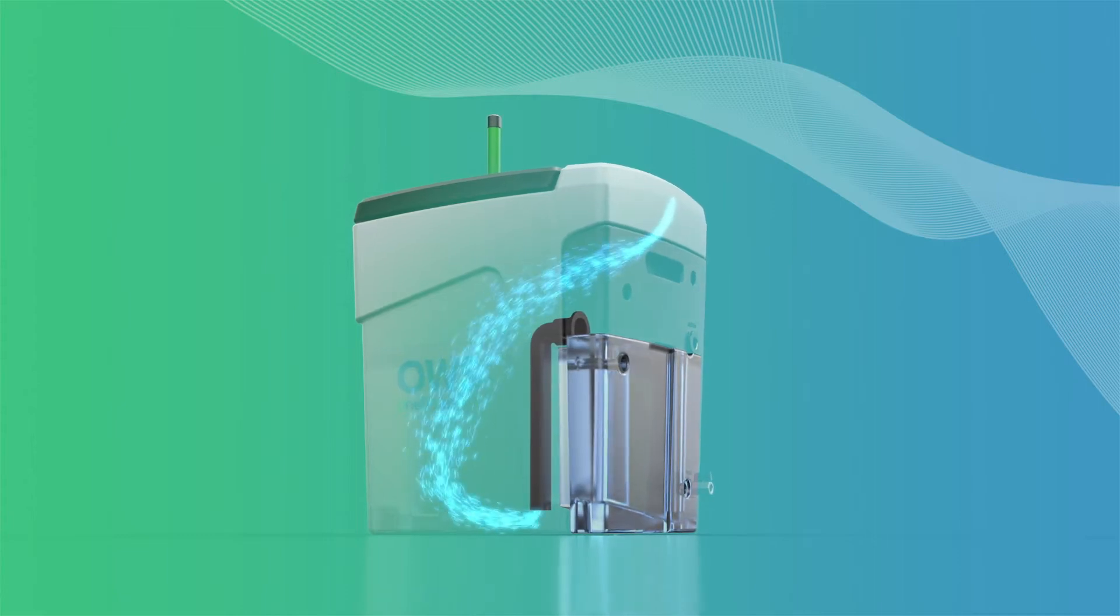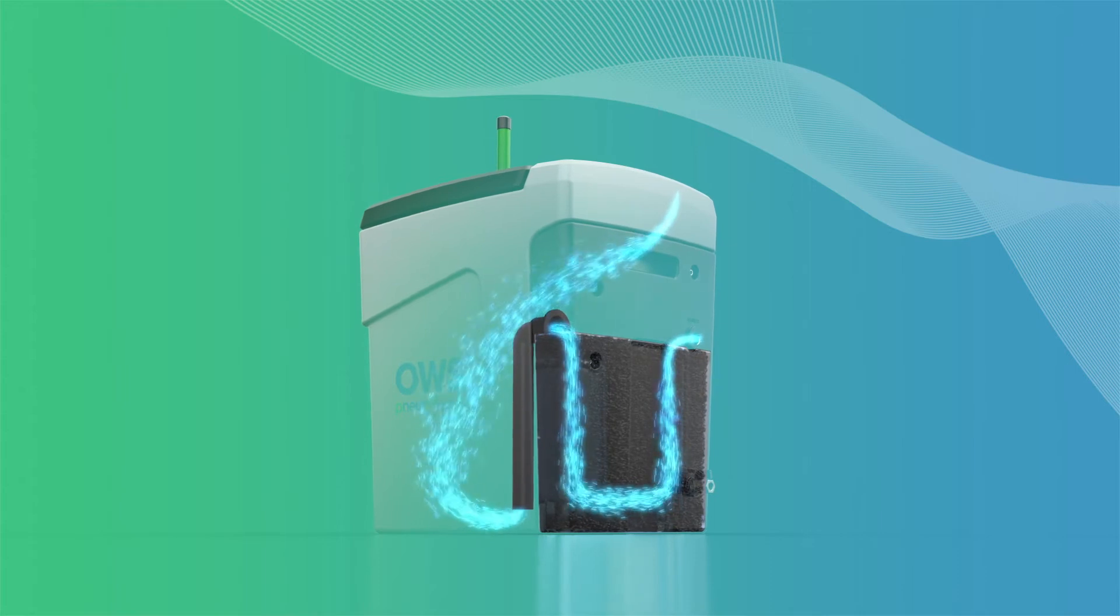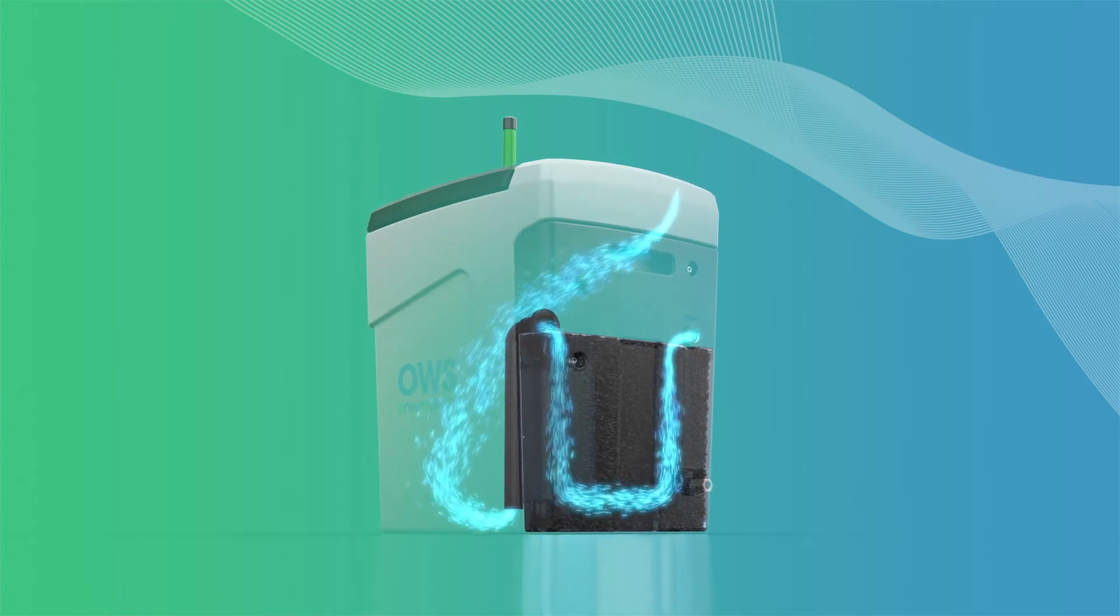Next, the condensate flows into the second chamber. Here, activated carbon separates the remaining oil droplets from the condensate.